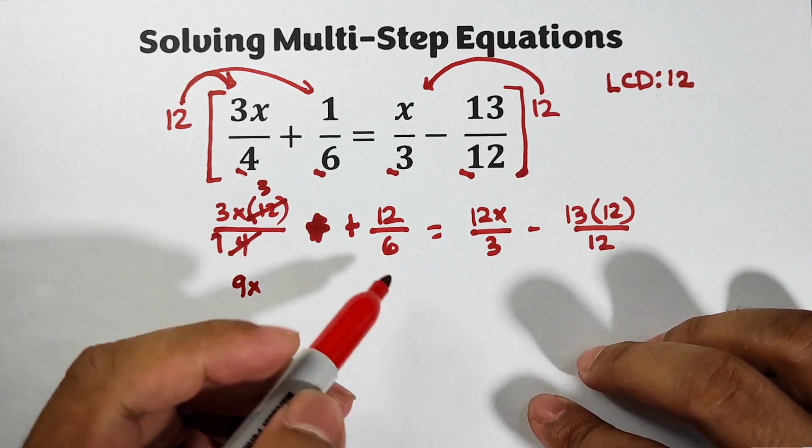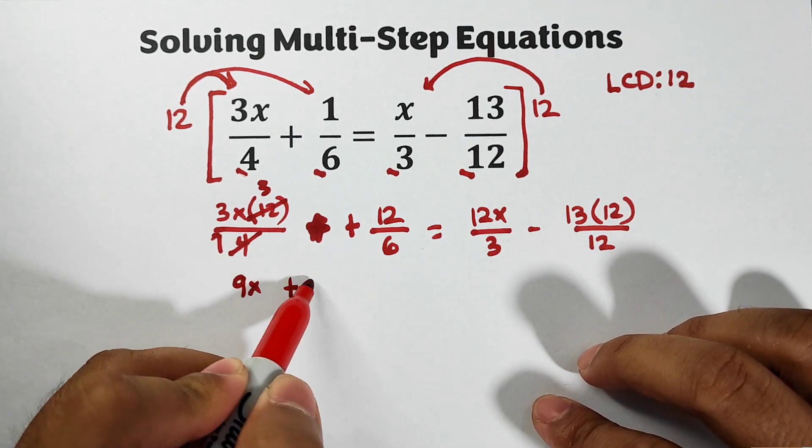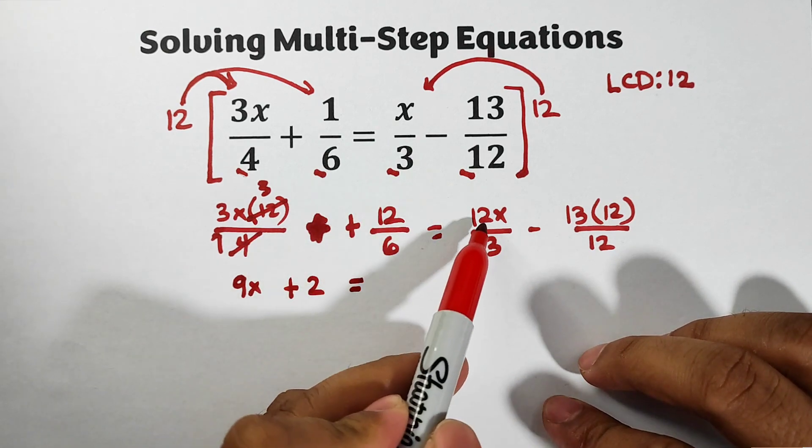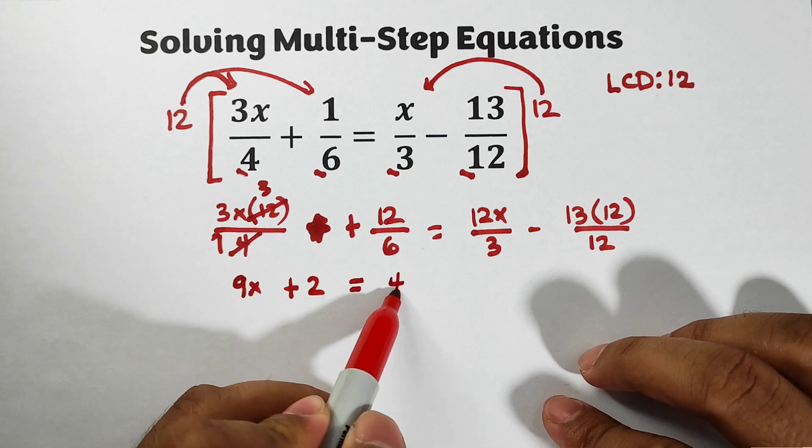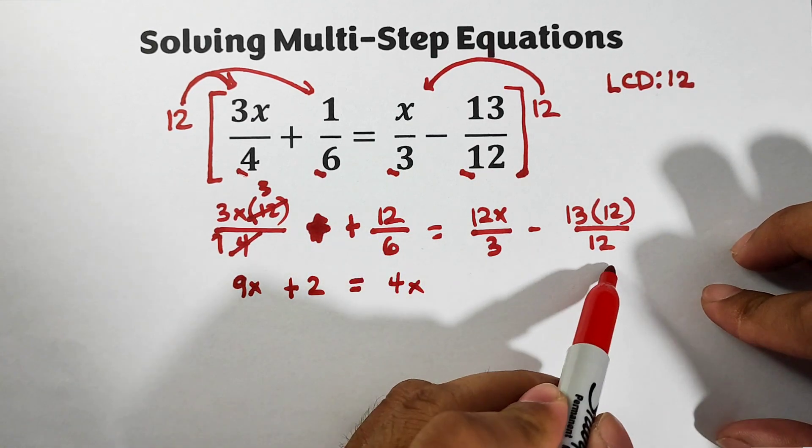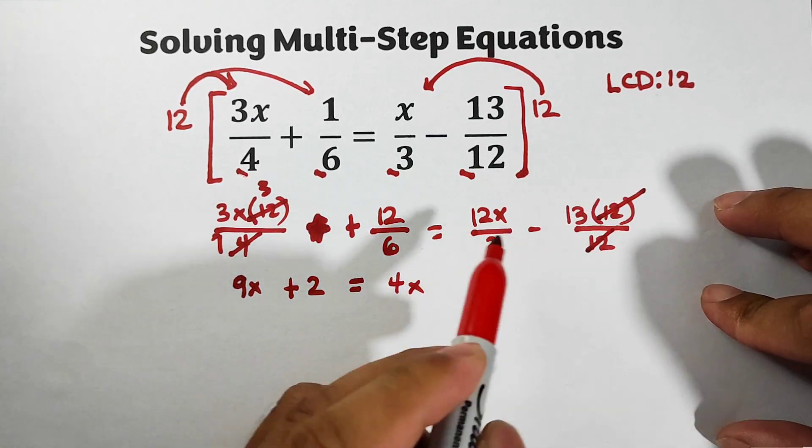For this term, 12 divided by 6 is 2, so this is plus 2, which is equal to your 12x over 3 is 4x. And this one we can easily cancel out 12 and 12, so it will become minus 13.